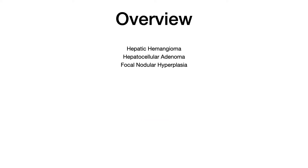In this video, we'll talk about three different benign liver tumors: one is hepatic hemangioma, two is hepatocellular adenoma, and three is focal nodular hyperplasia.